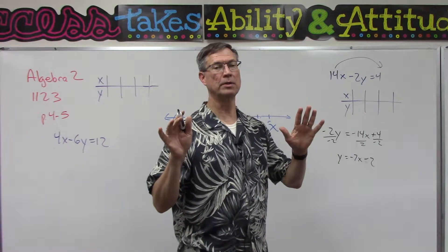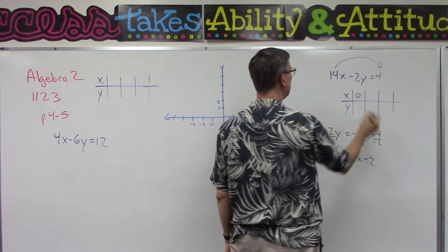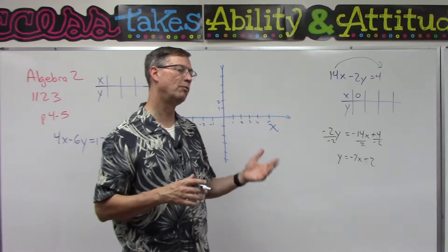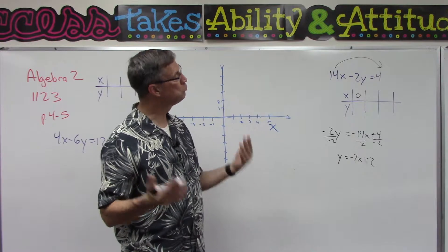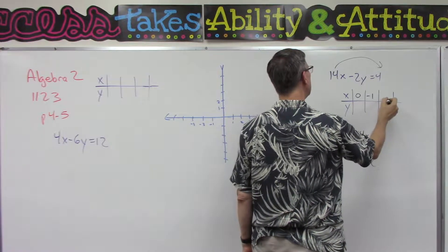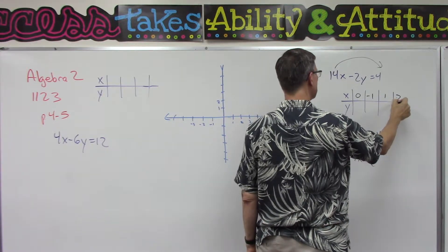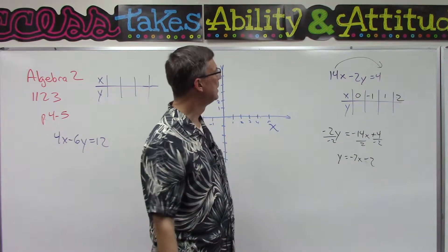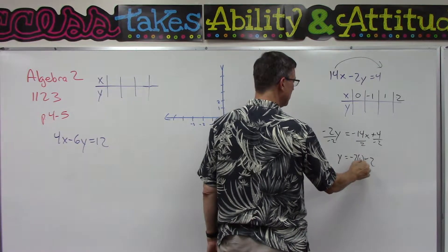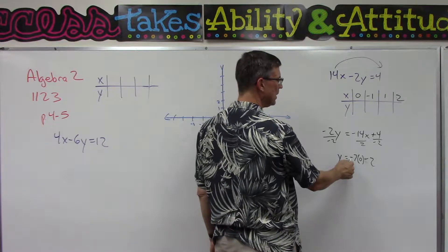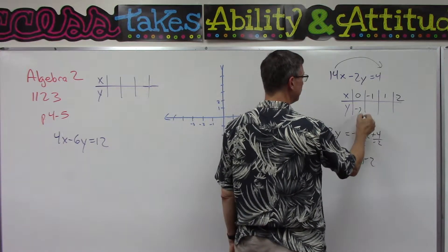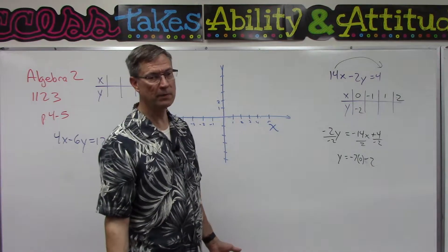Now we're going to plug in some numbers for x. Always — this is an always rule — always plug in 0 for x first. Then plug in a negative number and a positive number: could be negative 1, positive 1, maybe negative 2, positive 2. You can use any numbers you want. We want at least 3 points; I'm going to do 4: negative 1, positive 1, and positive 2. If I plug in 0 for x, using order of operations, negative 7 times 0 is 0, and 0 minus 2 is negative 2.